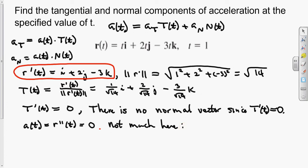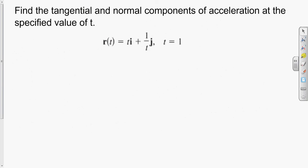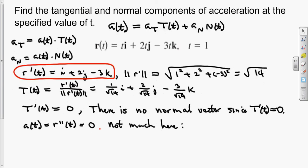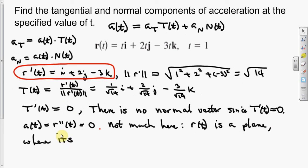So let's look at something with some curvature. Let me finish that note: R of t is a line where its derivative is a constant. Let's jump to a better example.